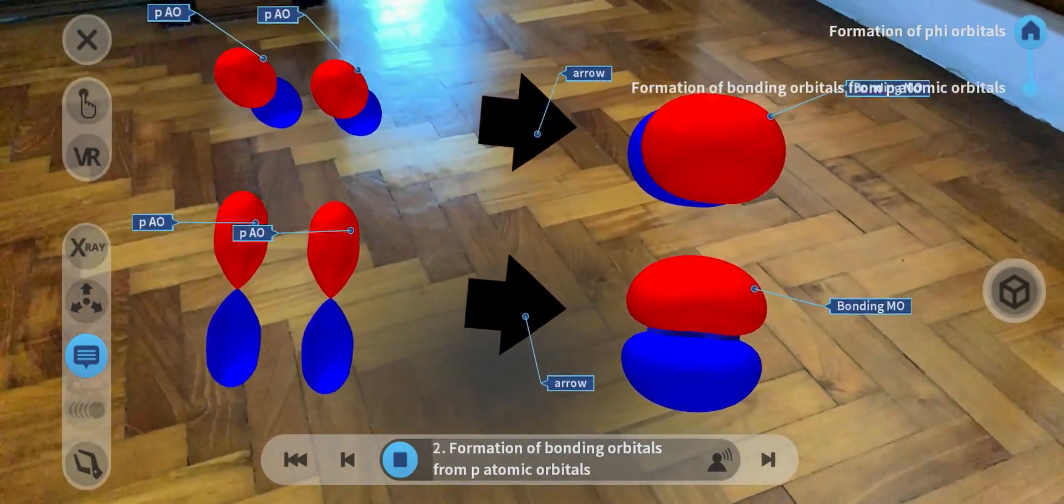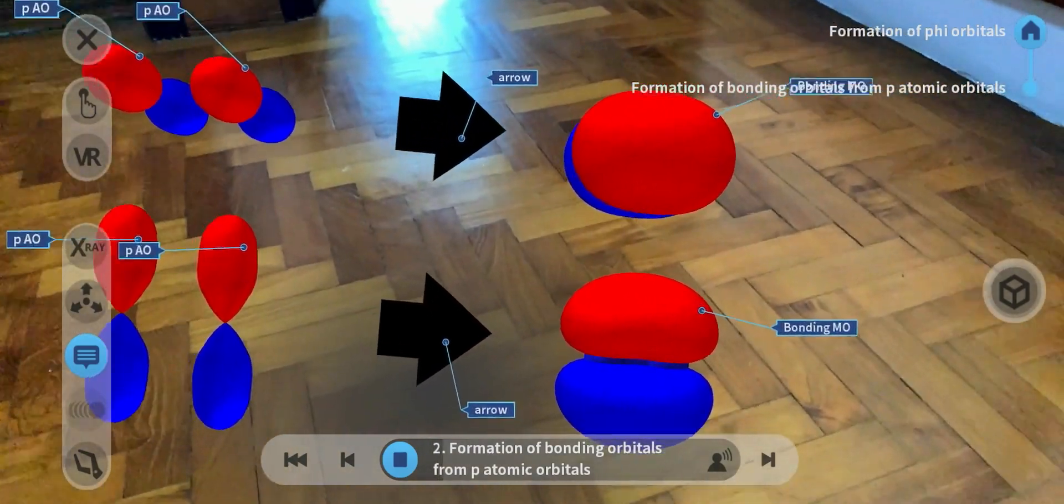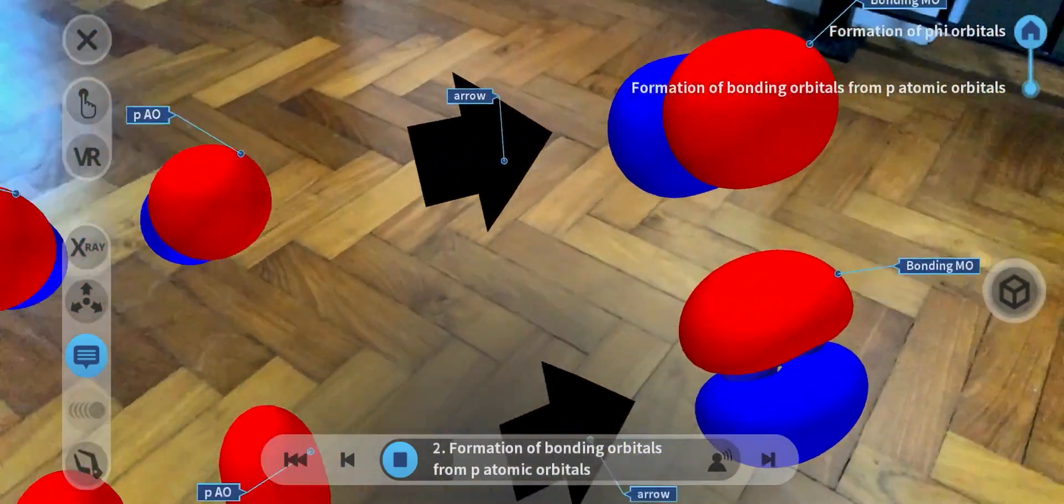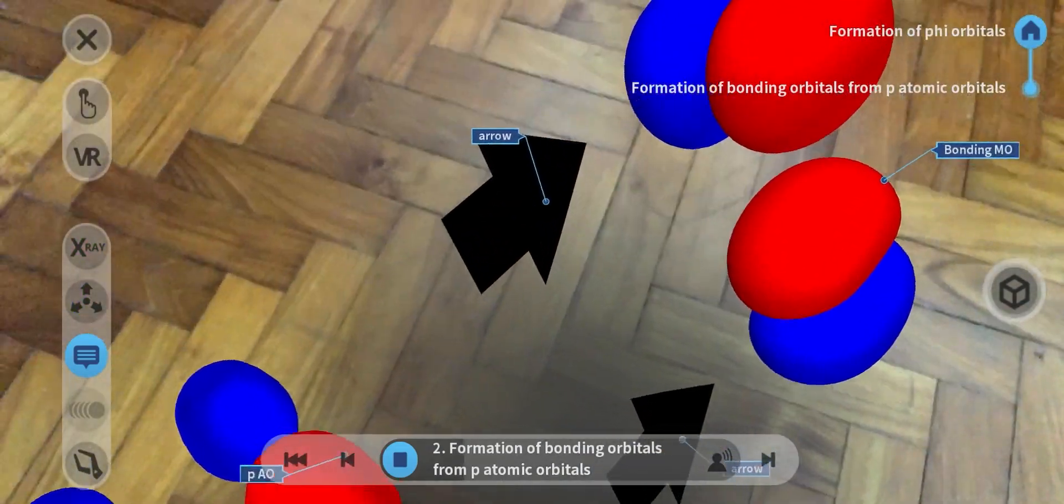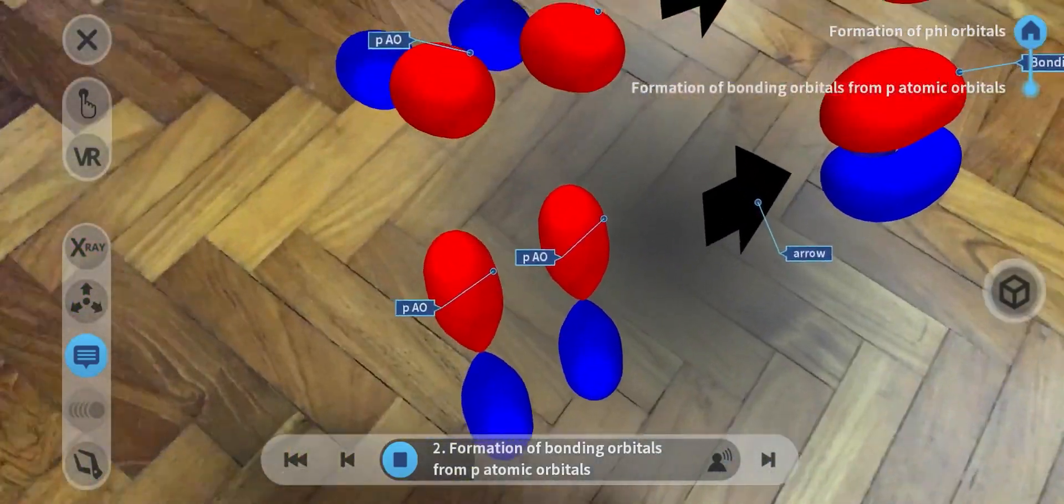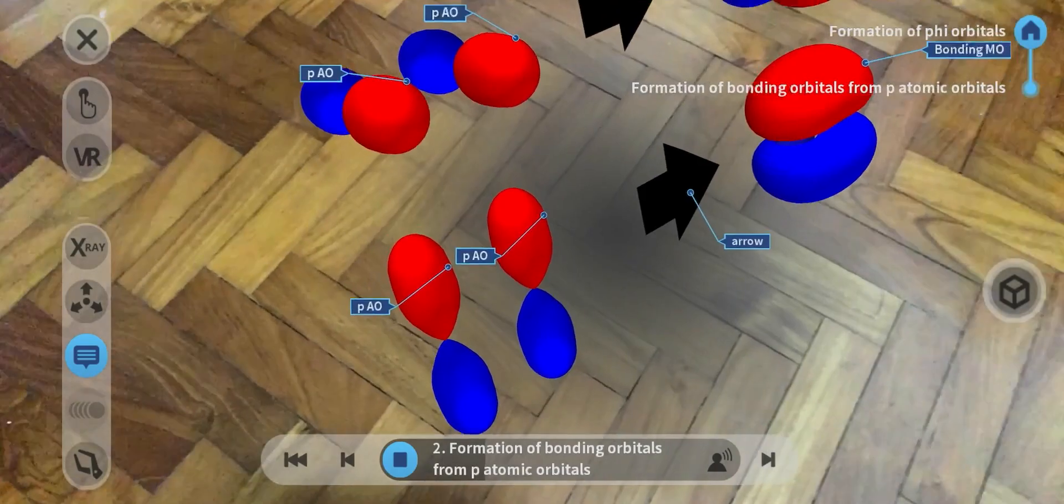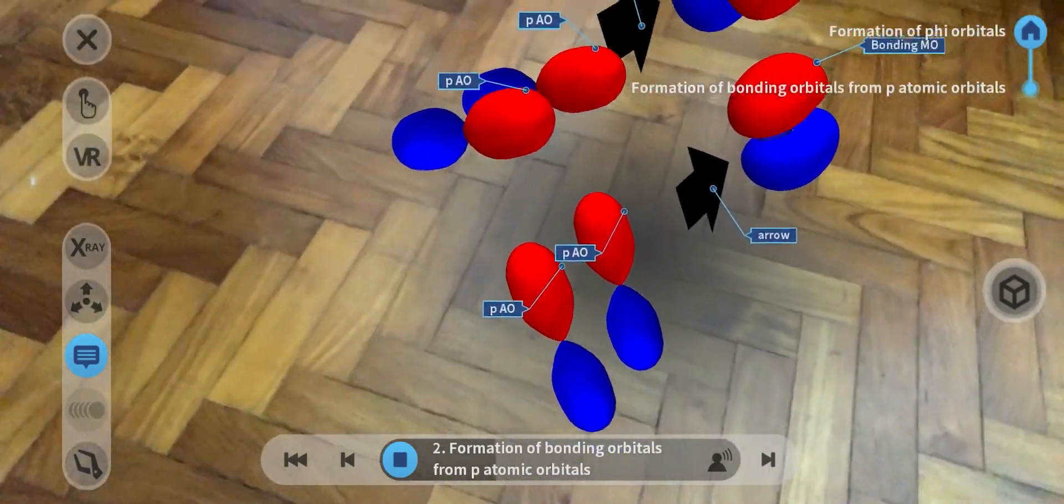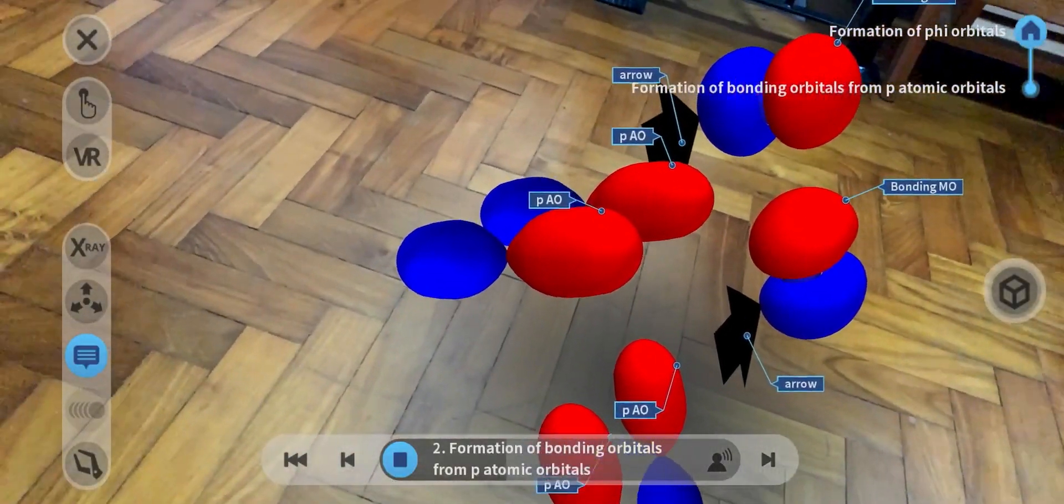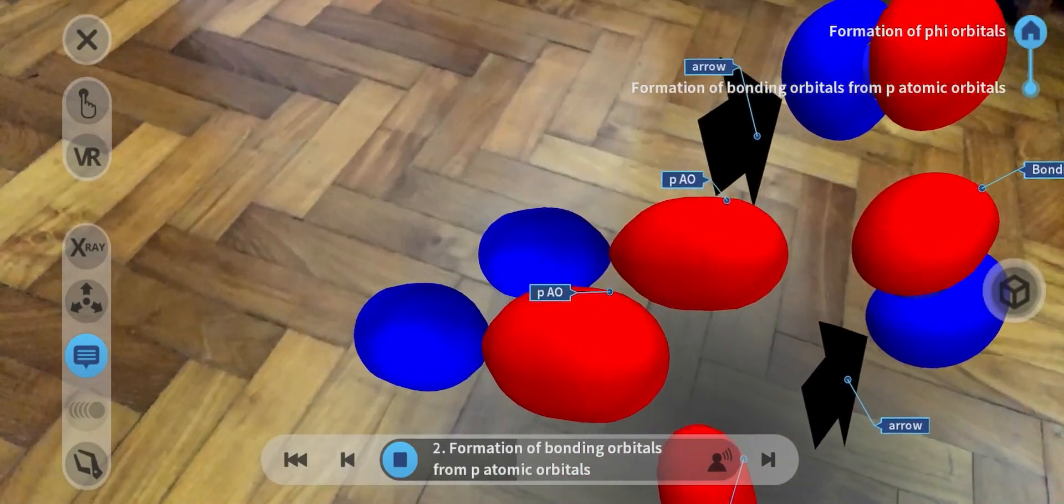When two p-atomic orbitals combine parallel to each other, a pi bond or pi molecular orbital forms. In this case, the two p-atomic orbitals are bonding in phase, forming a bonding sigma molecular orbital.